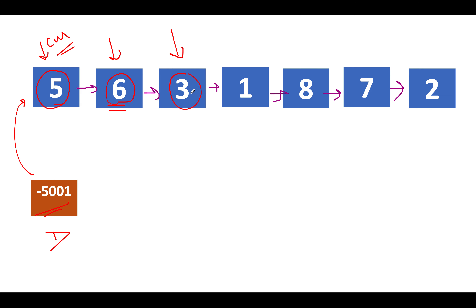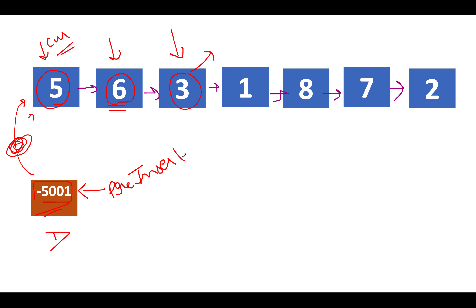As soon as we see 3, we compare it with the previous value, which is 6. The current value 3 is a mismatching case — 3 is out of sync with the sorting order. We need to identify the correct position for 3. We start iteration from the dummy node and iterate up to the current node to find the appropriate position. The first element is -5001, lower than 3, so we continue. Next is 5, which is greater than 3 — insertion must happen here in the middle.